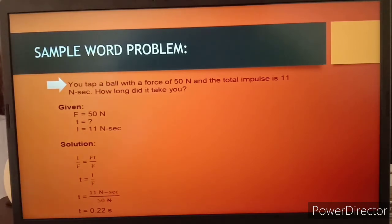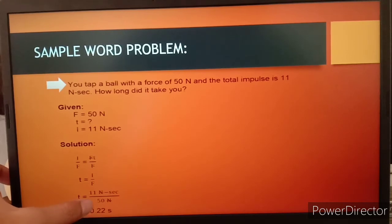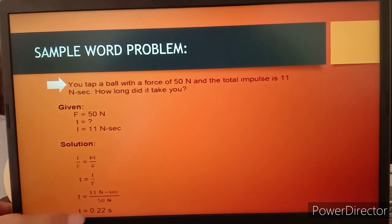Since time is what we're looking for, therefore the final answer should be in seconds. We're just going to find the quotient of these values, 11 divided by 50. Try it on your calculator, and you will get 0.22 as the answer. Given these values of force and impulse, we get the value of time, which is equal to 0.22 seconds.